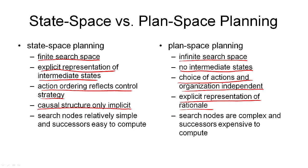In state space planning, the search nodes are relatively simple — each is a set of ground atoms and successors are relatively easy to compute, though there may still be an exponential number of applicable actions. In plan space search, search nodes are quite complex, meaning we have constrained networks to maintain as part of our refinement process, so successors are potentially expensive to compute. Overall, plan space planning was a big step forward when introduced, but nowadays, due to efficient heuristics, state space planning is the more efficient way of searching for solutions.